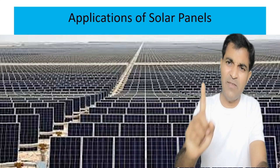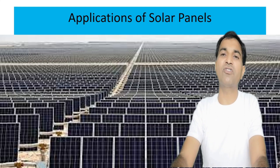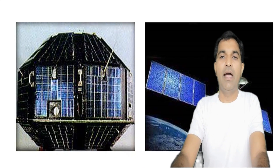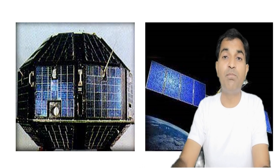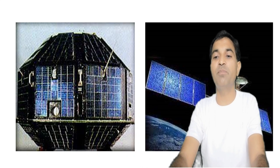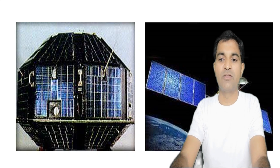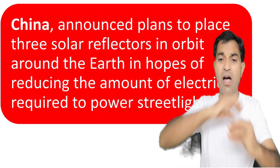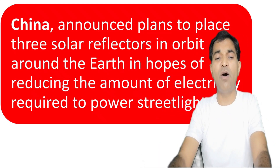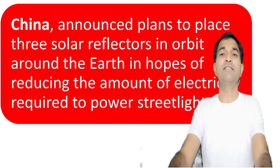Applications of solar panels include primarily electricity production. Solar panels are used on satellites and on the International Space Station (ISS). China announced plans to place three solar reflectors in orbit around the Earth to reduce the amount of electricity required to power street lights.